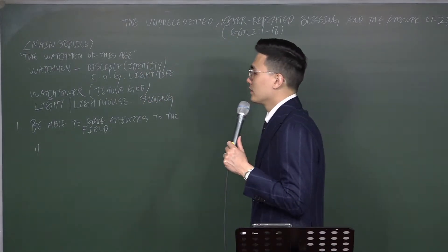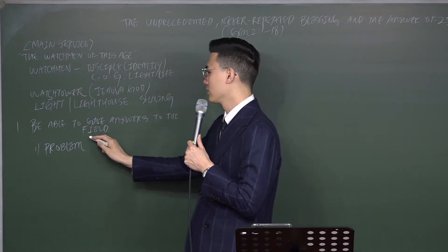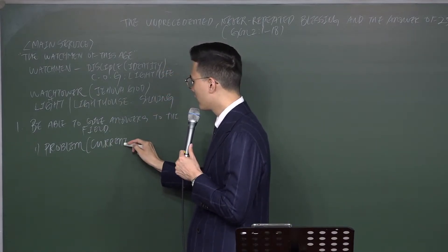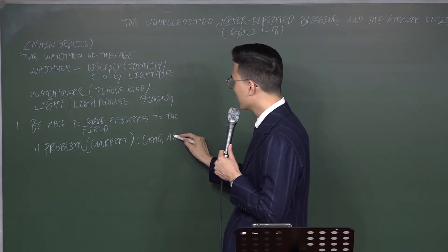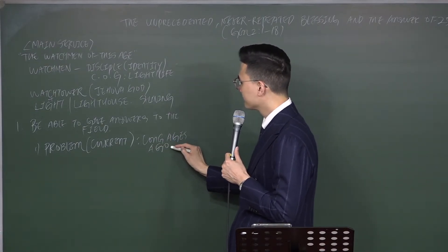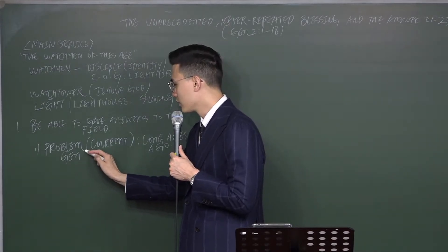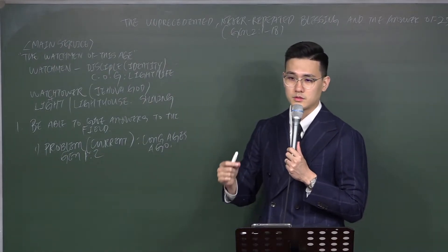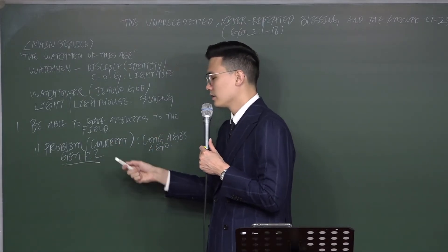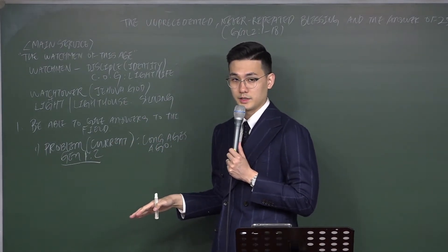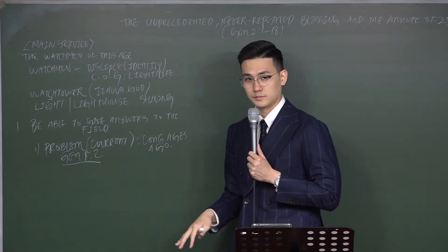You must see the field correctly. You must first know that this problem of this current world was a problem from long ages before. When did this problem start and exist? Genesis 1 verse 2. Chaos, darkness, void, emptiness. Satan was already before this earth was created.